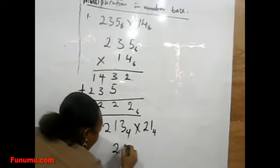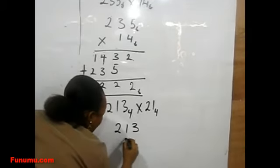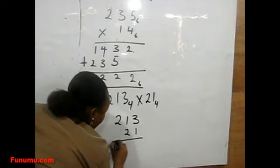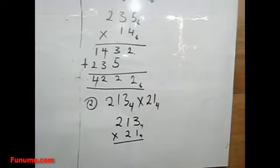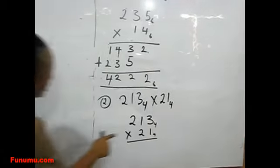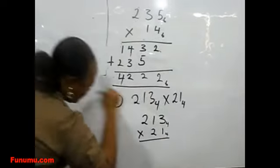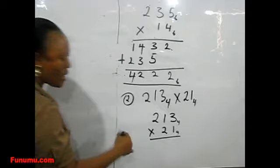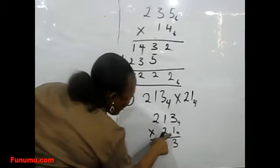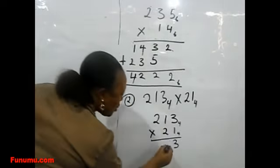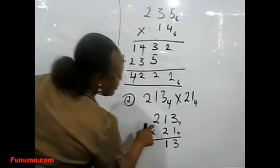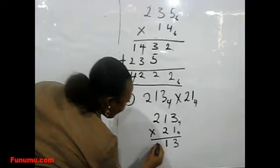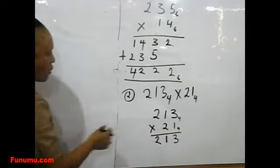Now I write out my number: 213₄ times 24₄. The base is 4. Now go ahead. 3 times 1 is 3. 3 is less than the base, so we can write it down. 3 times 1 is 1, we can write it down. 3 times 2 is 6... wait, 1 times 1 is 1, we can write it down. 1 times 2 is 2, not above the base, so write it down.